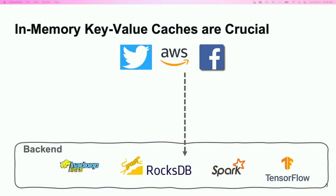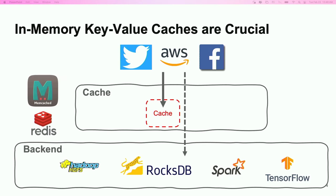Memory-based look-aside key-value caches are critical for many applications and systems. Before accessing data from slow back-end storage or compute nodes, applications usually first check some in-memory caches like Memcached or Redis. By doing so, we can get better application performance as well as less back-end load.